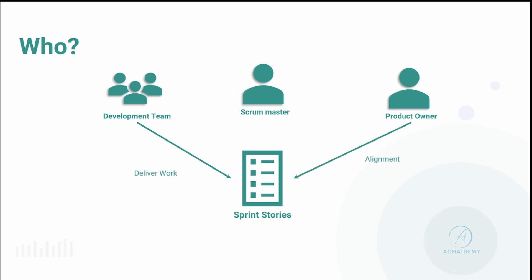The development team is responsible for completing the work. The Scrum master is responsible for facilitating the process and removing any obstacles. The product owner is responsible for providing directions and ensuring the work aligns with the business objectives.